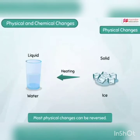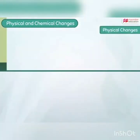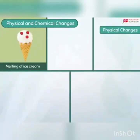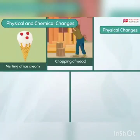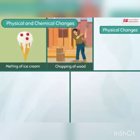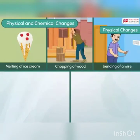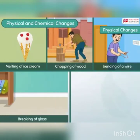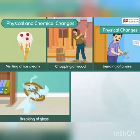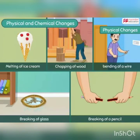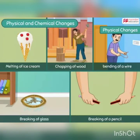Most physical changes can be reversed. Melting of an ice cream, chopping of wood, bending of a wire, breaking of a glass, and breaking of a pencil are all physical changes.